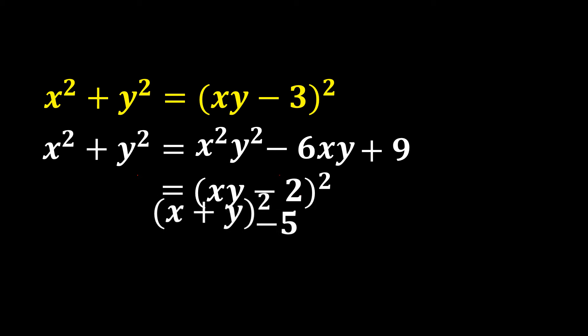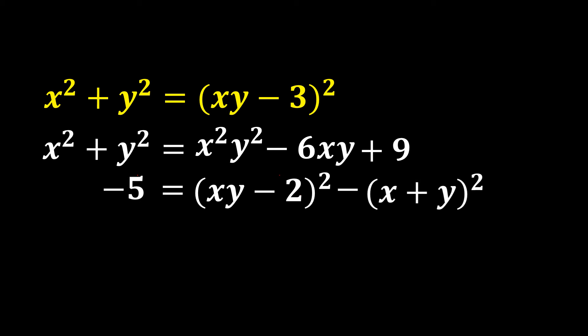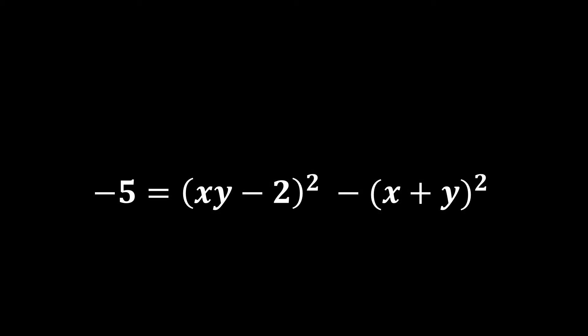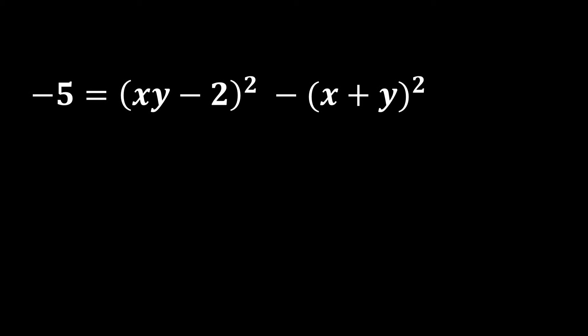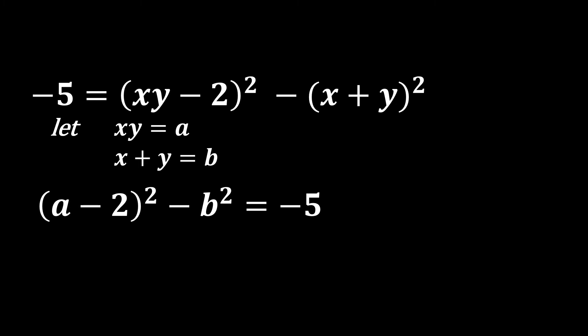Switching all variables to one side and the constant to the other, we get a difference of two squares identity. Now we consider our substitution: let a = xy and b = x + y. The equation transforms into: (a - 2)² - b² = -5.